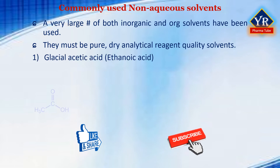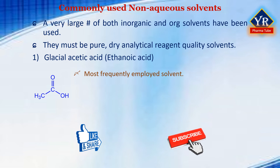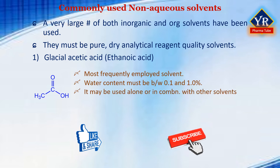1. Glacial acetic acid, also known as ethanoic acid, is by far the most frequently employed solvent for this purpose. Before it is used, it is advisable to check the water content, which may be between 0.1 and 1%, and to add just sufficient acetic anhydride to convert any water to the acid. The acid may be used by itself or in conjunction with other solvents such as acetic anhydride, acetonitrile, and nitromethane.